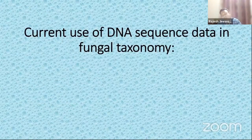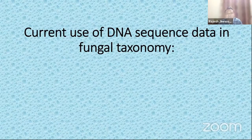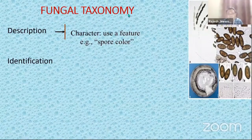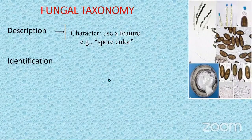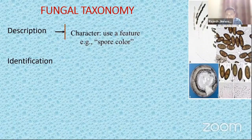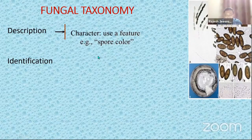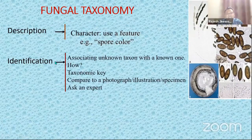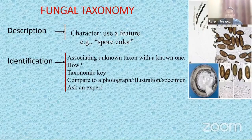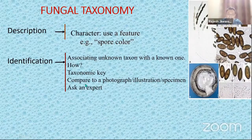Coming to the second part of my talk, I would like to focus on the current use of DNA sequence data in fungal taxonomy. Before I embark on DNA, I would like to talk about fungal taxonomy in general. What we usually do whenever we describe a fungus is describe it first using characters — for example, the spore colour, the shape of the spore. Then we try to identify it by associating that particular taxon with a known one, using a taxonomic key, or comparing it with a photograph, specimen, or asking an expert.